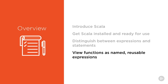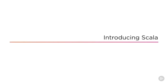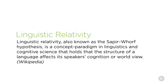We will consider how functions are really just named reusable expressions. So what is Scala? Scala is a general purpose programming language just like Java. In fact it runs on the JVM, causing a lot of folks to ask why yet another language that runs on the JVM is needed when Java serves its purpose so well.